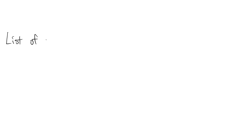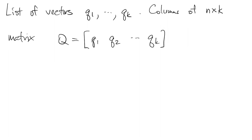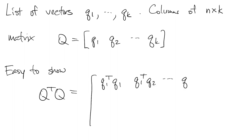Now suppose we have a list of vectors, q1 through qk, it's natural to put them in as columns of a matrix capital Q. And then if we look at Q transpose Q, well, by definition of matrix multiplication, this just gives us all possible pairwise inner products between these vectors.